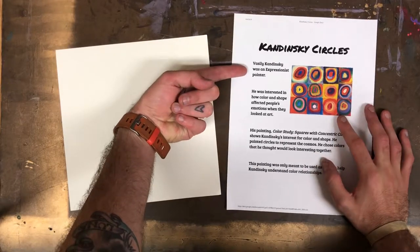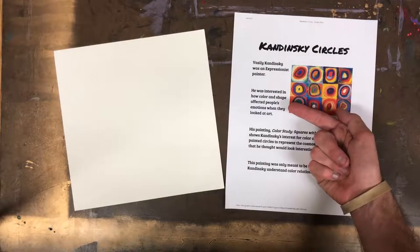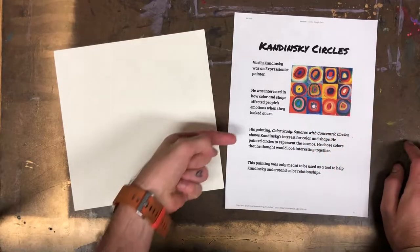Vasily Kandinsky was an expressionist painter. He was interested in how color and shape affected people's emotions when they looked at art.